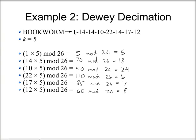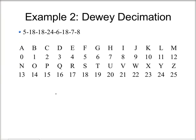Now replacing the original numbers with the new ones: 1 becomes 5, 14 becomes 18, 10 becomes 24, 22 becomes 6, 14 again becomes 18, 17 becomes 7, and 12 becomes 8. Going back to the chart to find the corresponding letters: 5 is F, 18 is S, 24 is Y, 6 is G, 18 is S, 7 is H, and 8 is I. So this is the encrypted message for 'bookworm' using the Decimation Cipher with multiplication by 5.